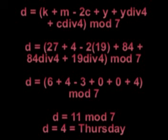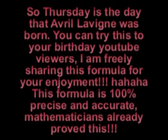D equals 27 plus 4 minus 2 times 19 plus 84 plus 84 div 4 plus 19 div 4 modulo 7. D equals 6 plus 4 minus 3 plus 4 modulo 7. D equals 11 modulo 7. D equals 4 equals Thursday. So Thursday is the day that Avril Lavigne was born.